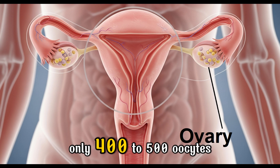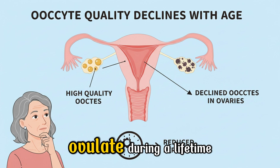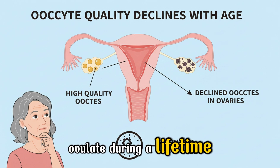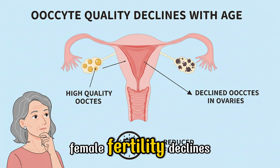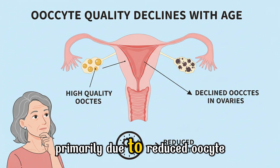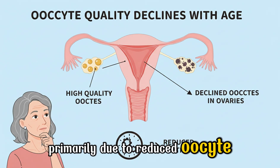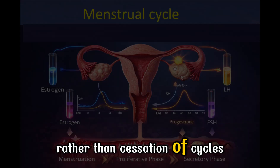Only 400 to 500 oocytes ovulate during a lifetime. Female fertility declines primarily due to reduced oocyte quality rather than cessation of cycles.